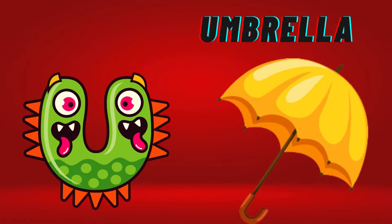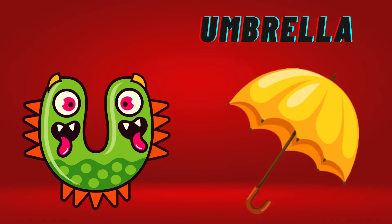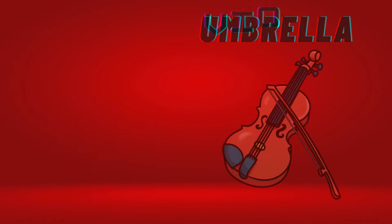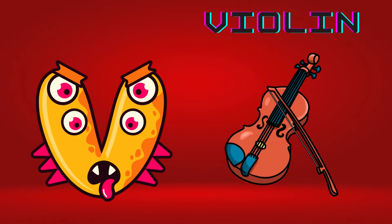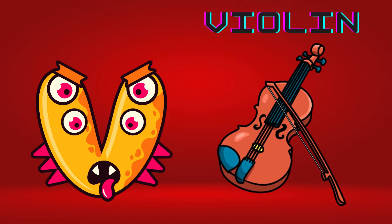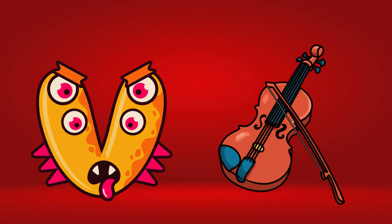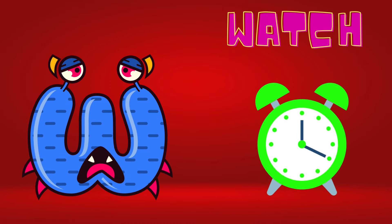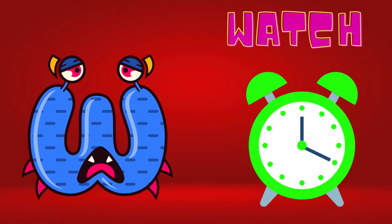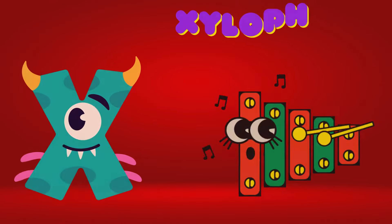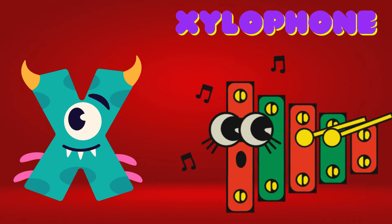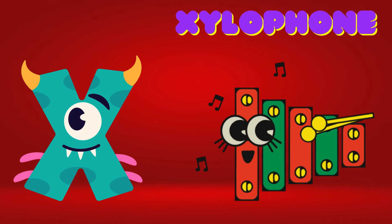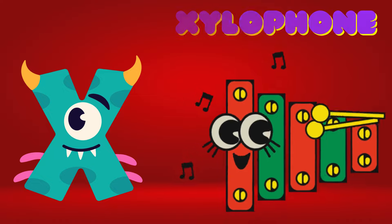U is for Umbrella, U-U-Umbrella. V is for Violin, V-V-Violin. W is for Watch, W-W-Watch. X is for Xylophone, X-X-Xylophone.